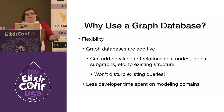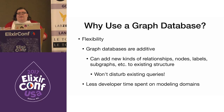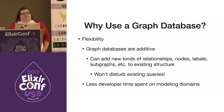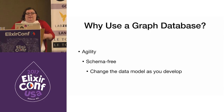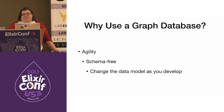Graph databases are also flexible — they're additive, meaning you can add new nodes, relationships, and labels without affecting existing queries. It's so flexible you don't have to model domains as rigorously as you might with a SQL database before starting a project, which saves a lot of developer time. Lastly, graph databases are agile and schema-free, so you can change the data model as you develop and as new business requirements come up.